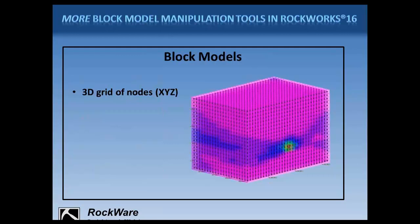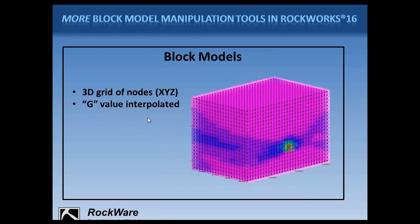First, some definitions. A solid or block model is a three-dimensional grid of nodes at regularly spaced XYZ locations, generated to the extents of the output or model dimensions you've established in Rockworks. We use the terms block model and solid model interchangeably. Each node is assigned a G value, which might represent contaminant concentrations, geophysical measurements, lithology, colors, and so on. This G value is interpolated from the project data using one of the available modeling methods. In Rockworks, the block model is stored in an rwmod file, which just contains numbers — the listing of the XYZ points and the G values.